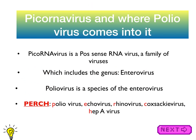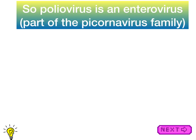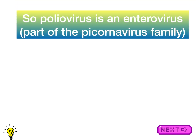Here's a mnemonic: 'perch on the peak.' P for polio, E for echovirus, R for rhinovirus, C for coxsackievirus, and H for hepatitis A virus — these are the members sitting on the peak, which is your picornaviridae. So poliovirus is an enterovirus, which is part of the picornaviridae family.